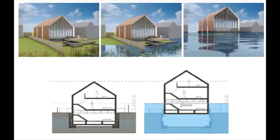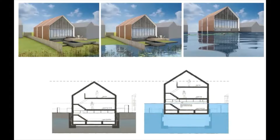The floating house project applies amphibious structure design in practice. In normal conditions, the house sits on the ground. When flooding occurs, the house rises and floats on the flood water. The idea of an amphibious house gives the experience of living in both water and land. In engineering terms, it can be described as a hybrid structure — lightweight and partially supported by both land and water simultaneously.